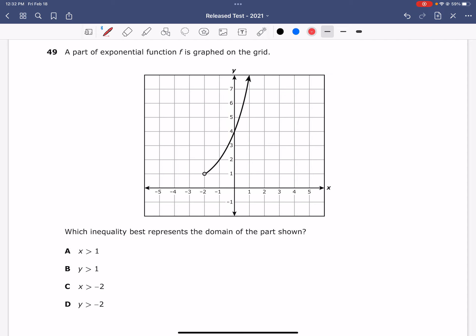A part of exponential function f is graphed on the grid. Which inequality best represents the domain of the part shown? The vocabulary word we need to be aware of here is domain, and we need to remember that domain means the set of x values that the graph touches.